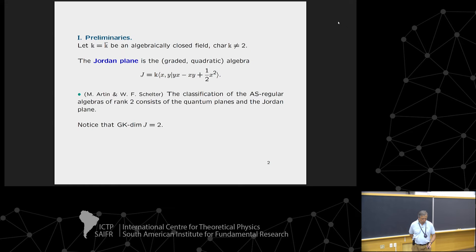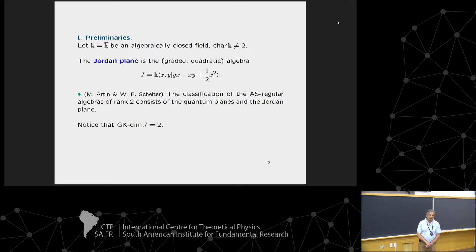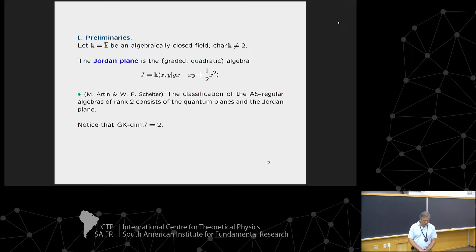The basic input for the construction of this Hopf algebra is the so-called Jordan plane. K will be an algebraically closed field, and except for the last section, the characteristic of K will be either odd or zero. The Jordan plane is a quadratic algebra, presented by generators and relations, with only one relation of degree two. Formally, it is the algebra generated by x and y with relation yx = xy + (1/2)x². The one-half could be absorbed, but it's better to keep it for aesthetic reasons.